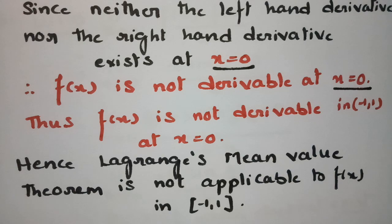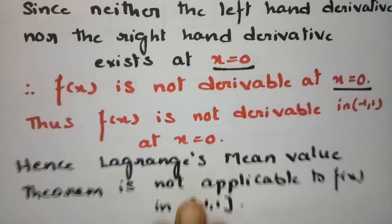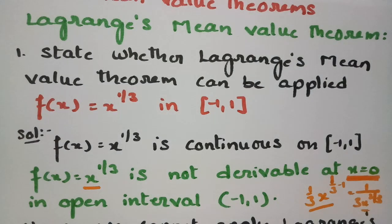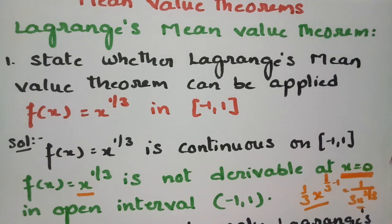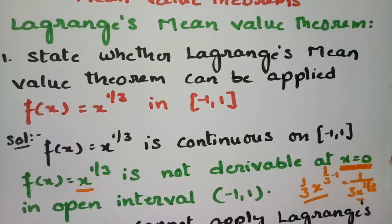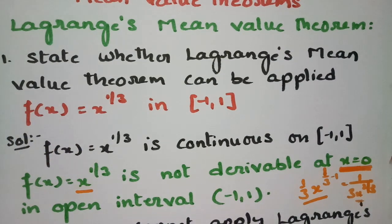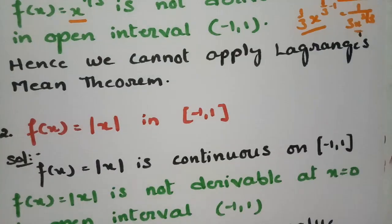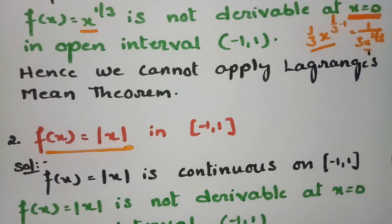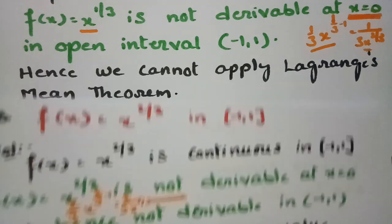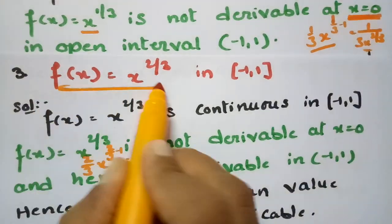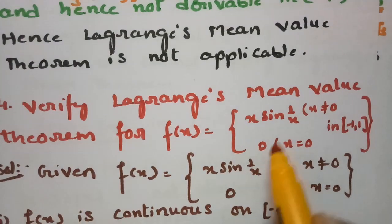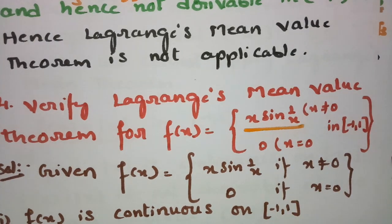So these are the most important problems in which Lagrange's mean value theorem is not applied. The first is f(x) = x^(1/3), the second is f(x) = |x|, the third is f(x) = x^(2/3), and the fourth is f(x) = x·sin(1/x).